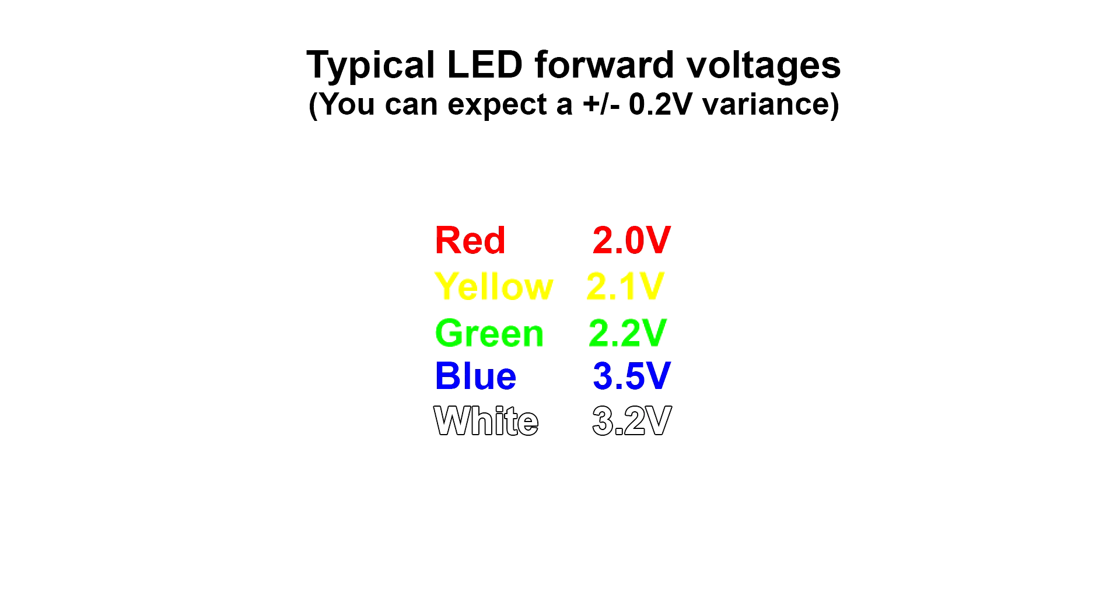Every LED will have a forward voltage that's a little different, and here's some rough guidelines of what you can expect from different LEDs. Once the LED is on, there will be a relatively constant voltage drop across it.